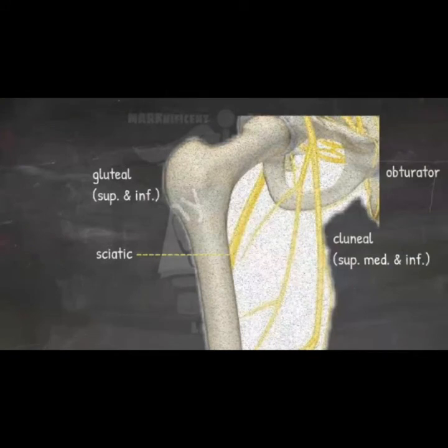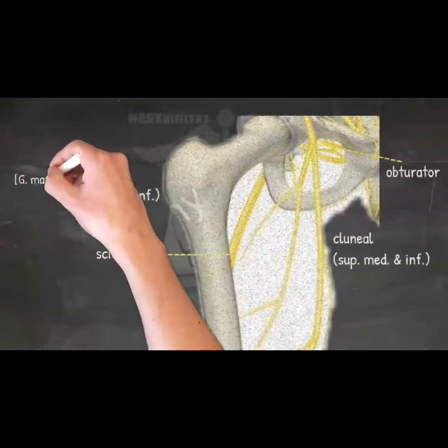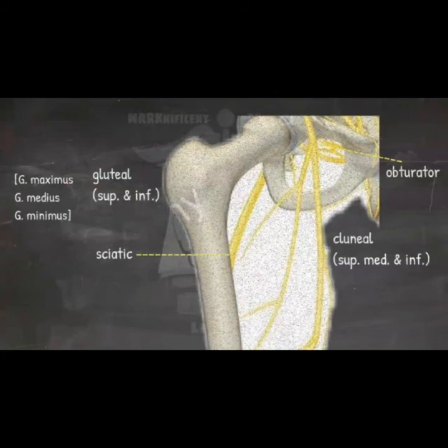The sciatic nerve is the longest single and continuous nerve in the entire body. It originates from the sacral plexus (L4–S3) and travels all the way down the posterior aspect of the lower limb, innervating the entire skin of the leg, the posterior thigh muscles, and the muscles of the leg and foot. The obturator nerve innervates the adductor muscles as well as the skin on the medial aspect of the thigh. The gluteal nerves innervate the three gluteal muscles. The cluneal nerves arise from the L1–S3 spinal nerves, as does the posterior femoral cutaneous nerve, and they are responsible for innervating the skin of the gluteal region.